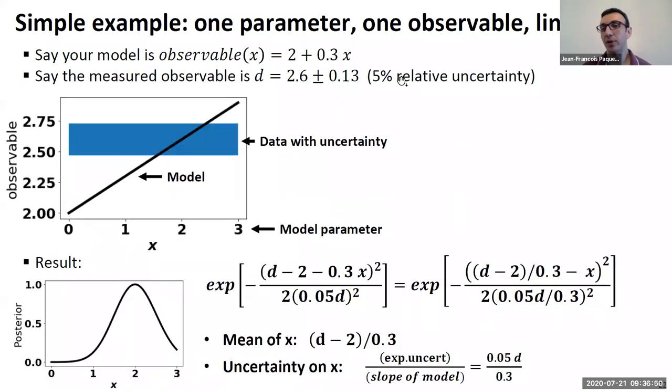Now let's say you change your model very slightly. Instead of having 2 plus x, you have some different value here. So your model is still linear, but with a different coefficient. What happens this time is if you still have 5% uncertainty on your data, of course, you end up with a much wider uncertainty on your model parameter.